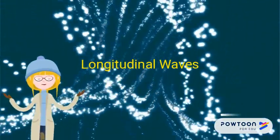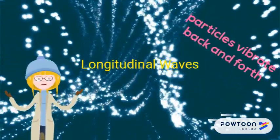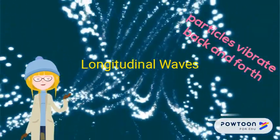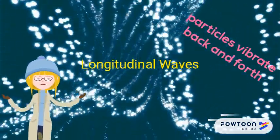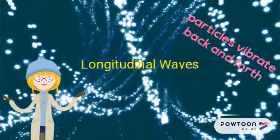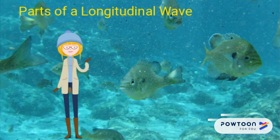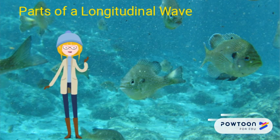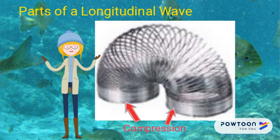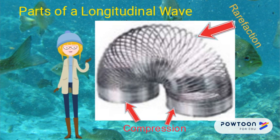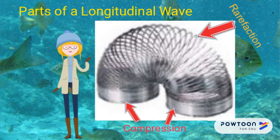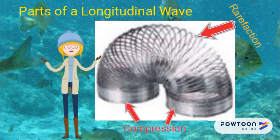In longitudinal waves, the particles of the medium vibrate back and forth along the path that the wave moves, in kind of a spiral. The parts of a longitudinal wave include compression — that's like when you push on the end of a spring and the coils crowd together — and rarefaction, which is like when you pull on the end of a spring and the coils are pulled apart.